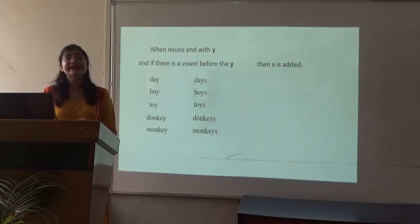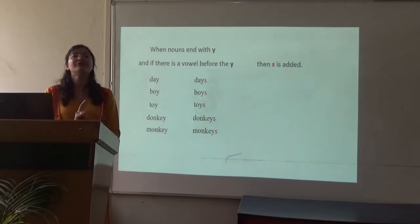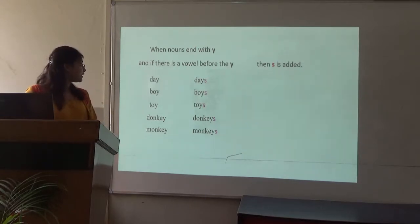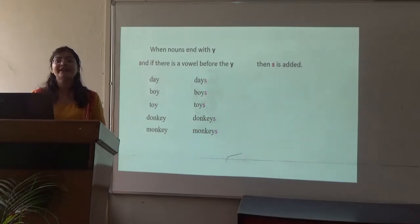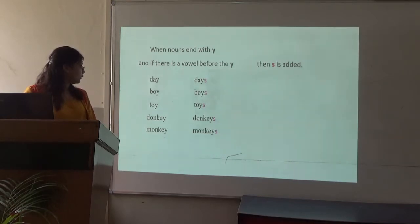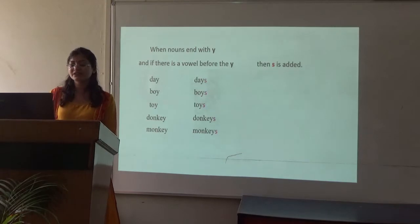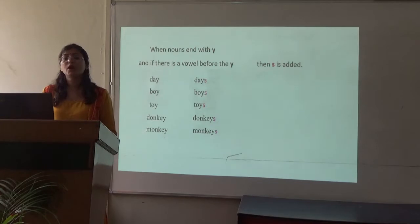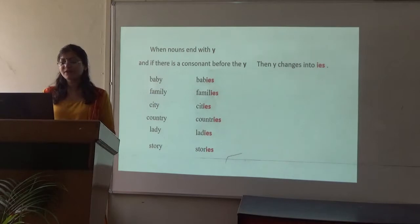Now there are some words that end with -y and have a vowel before the -y. When a noun ends in -y preceded by a vowel, we make the plural by simply adding -s. Like: day → days, boy → boys, toy → toys, donkey → donkeys, monkey → monkeys. In 'day' the letter before -y is 'a'; in 'boy' and 'toy' it is 'o'; in 'donkey' and 'monkey' it is 'e' — all vowels.